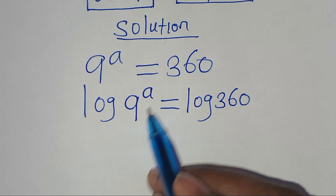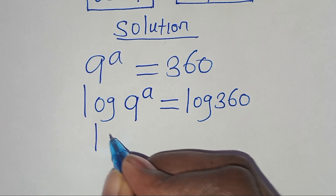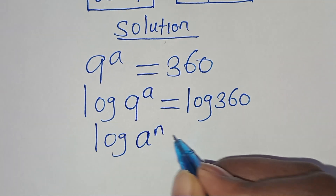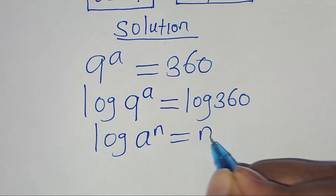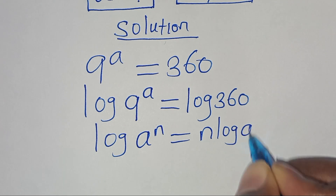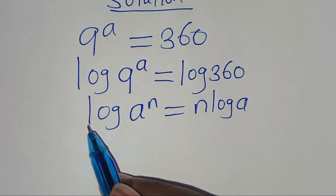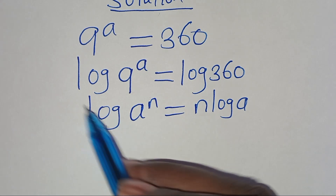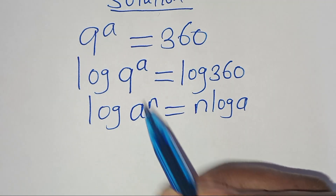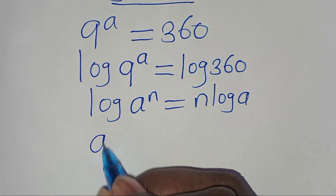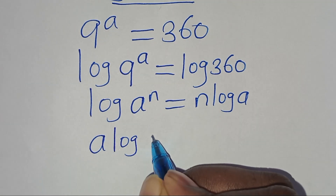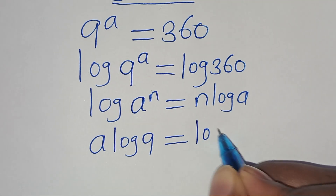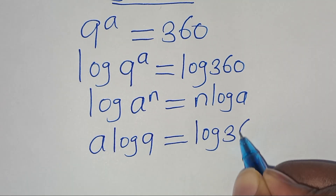So log 9 to the power of a is in the form of log(a) to the power of n, which we can express as n·log(a). Applying this logarithm property, then we have log 9 to the power of a becomes a·log 9, this is equal to log 360.